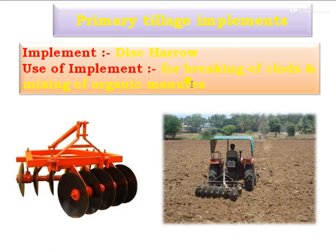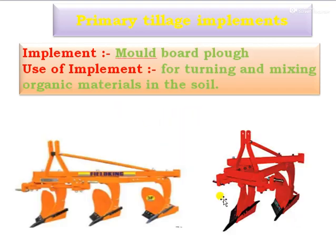Then this is a disc harrow. It is specifically used for disking operation, breaking of clods, and also mixing of organic manures as well as crop residues into the soil.